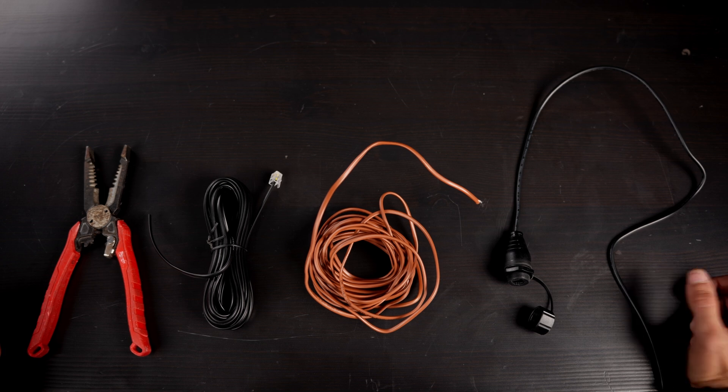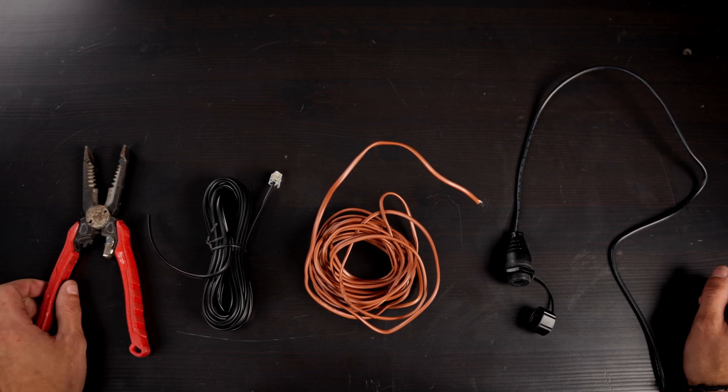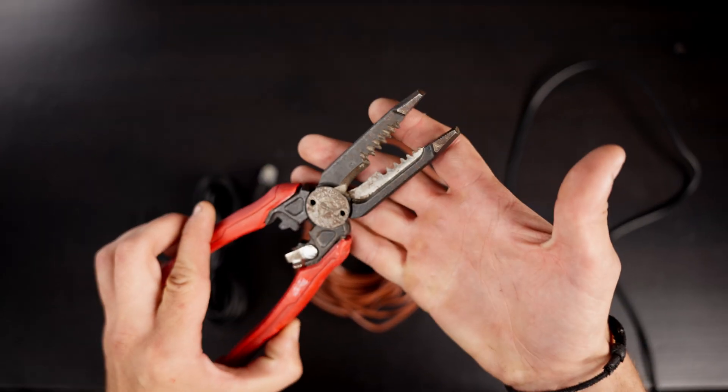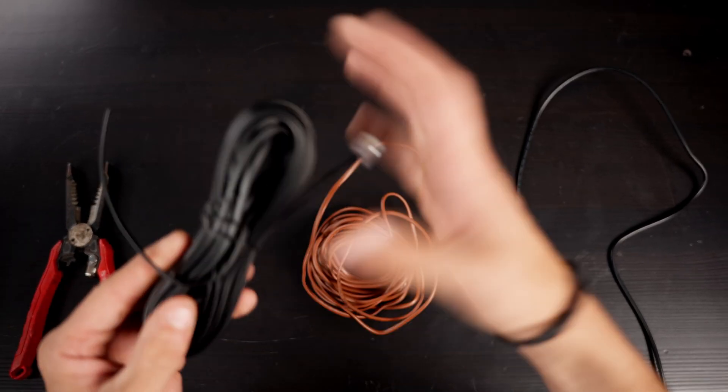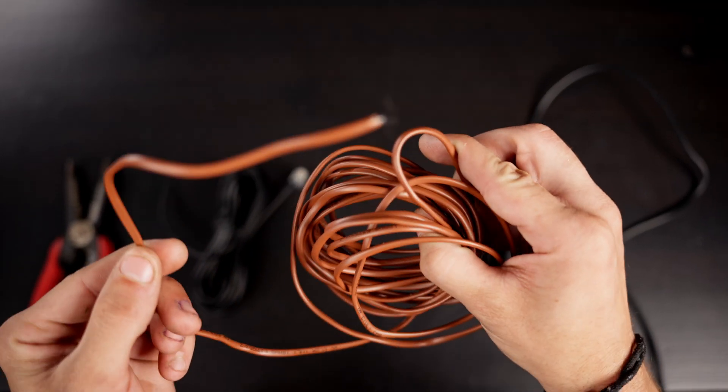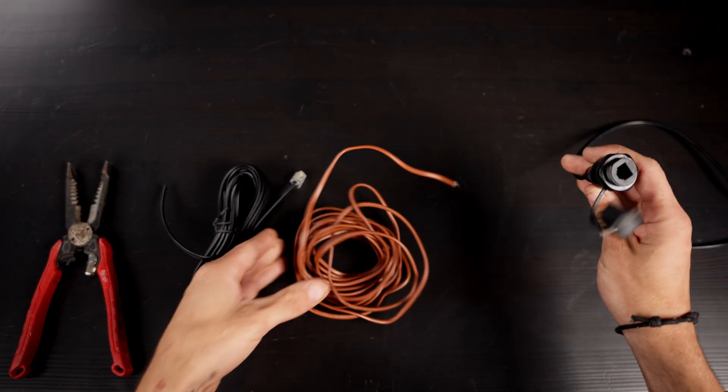Here's everything you're going to need in order to install your Faven lights to a 0-10 volt lighting controller. You'll need a pair of wire strippers, RJ11 cable, an 18-2 thermostat cable, and of course your Faven lighting.